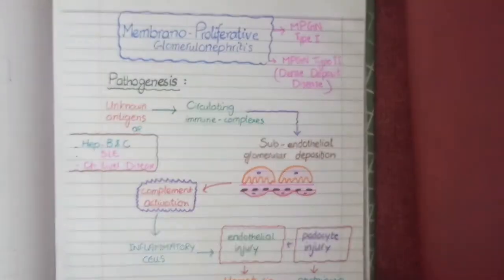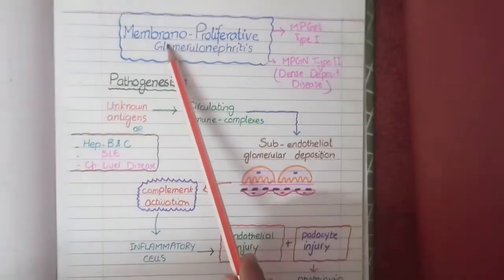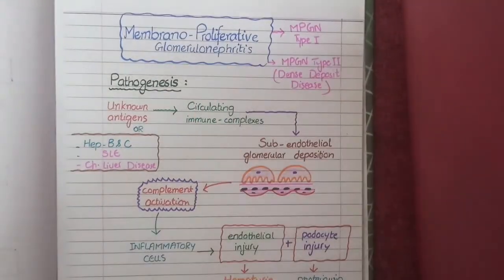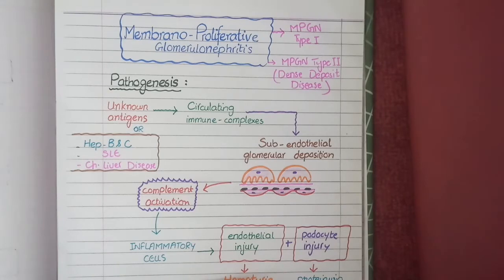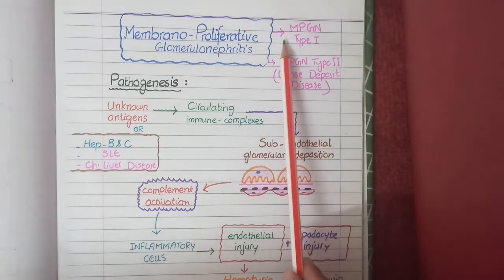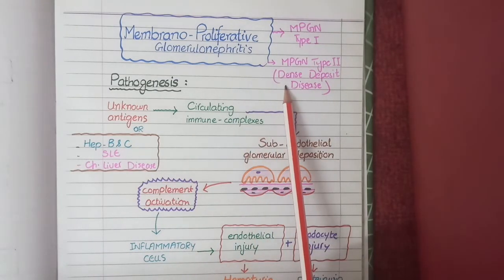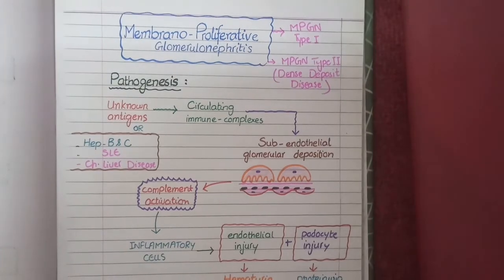Membranoproliferative glomerulonephritis is a type of glomerulonephritis that involves thickening of the basement membrane and proliferation of cells inside the capillary loops — that is why it is known as membranoproliferative. Previously it was divided into MPGN type 1 and MPGN type 2, also known as dense deposit disease. MPGN type 2 is now categorized separately under C3 glomerulopathy, so all the information here applies to type 1 MPGN.